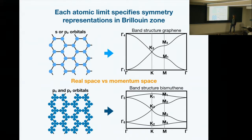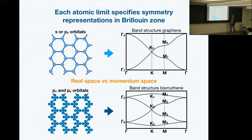In contrast, if we compare to px and py orbitals, we get a different structure where we also have this Dirac point, but then we have some other singly degenerate bands. In that case, we're not necessarily required to have this point at half-filling.